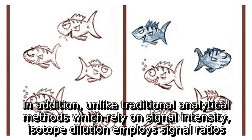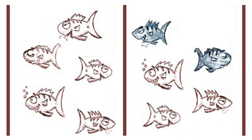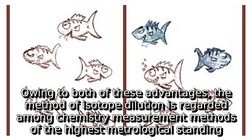In addition, unlike traditional analytical methods which rely on signal intensity, isotope dilution employs signal ratios. Owing to both of these advantages, the method of isotope dilution is regarded among chemistry measurement methods of the highest metrological standing.